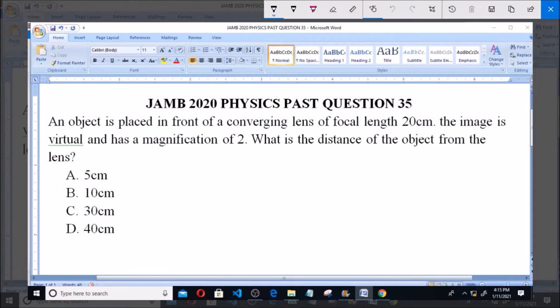Now, it is noted that the image is virtual, so it simply means v equals 2u, because we are told that it has a magnification of 2, so the image is twice the object.